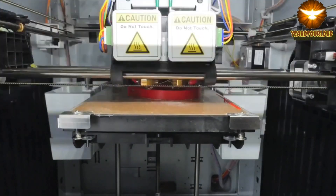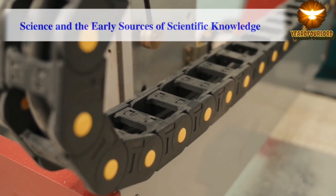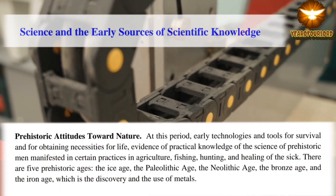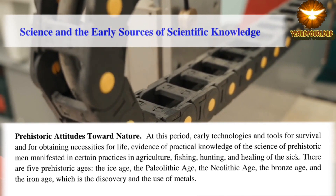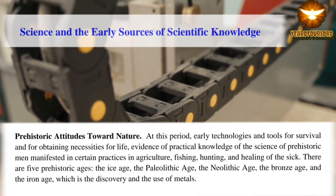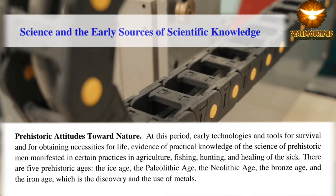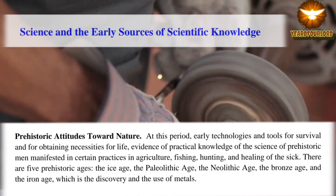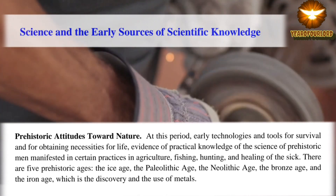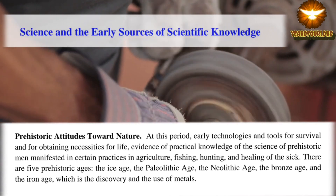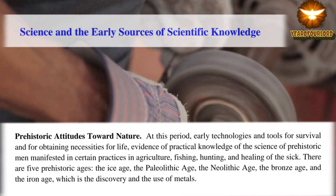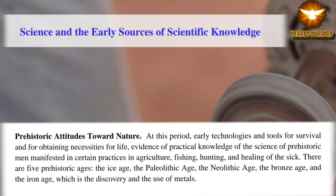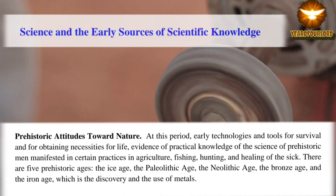The following are the early sources of scientific knowledge. First, prehistoric attitudes toward nature. At this period, early technologies and tools for survival and for obtaining necessities for life were developed. Evidence of practical knowledge is manifested in certain practices in agriculture, fishing, hunting, and healing of the sick. There are five prehistoric ages: the Ice Age, the Paleolithic Age, the Neolithic Age, the Bronze Age, and the Iron Age, which marks the discovery and use of metals.